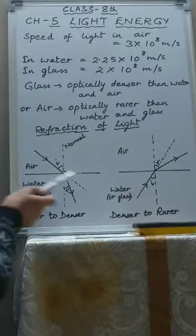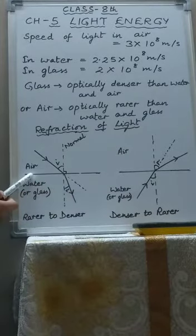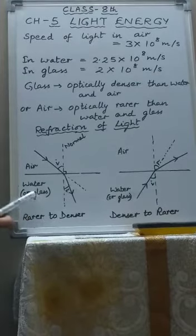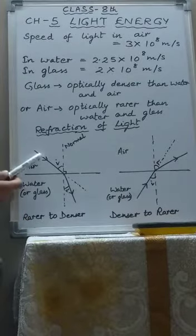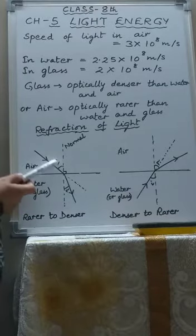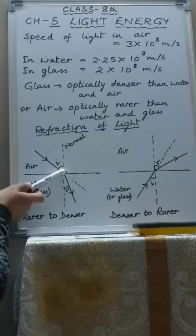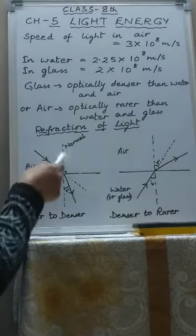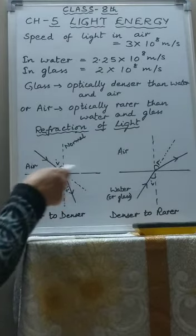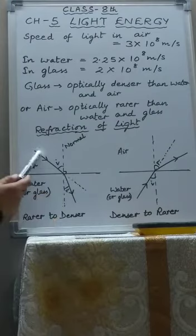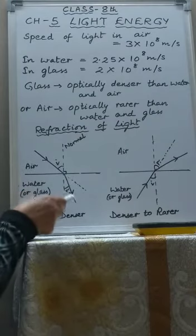This surface is separating two media: air and water. Air is an optically rarer medium; water and glass are optically denser media. This is the ray of light falling on the surface separating the two media. Now, this light, instead of continuing on a straight path, bends towards the normal, where the normal is the line perpendicular to the surface boundary separating the two media. So the light, instead of going straight, bends like this.